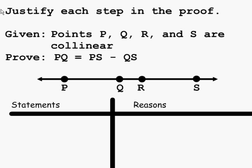Here we need to justify each step in the proof — we actually need to write the proof. Points P, Q, R, and S are collinear. We need to prove that PQ is equal to PS minus QS. That is, this segment PQ is equal to the distance of segment PS minus the distance of segment QS. Point R plays no bearing in what we're going to do today.